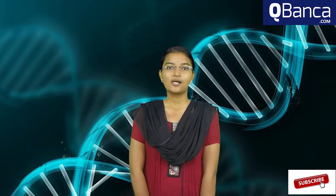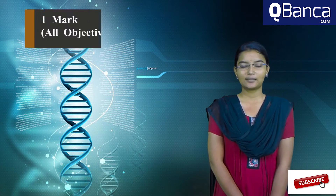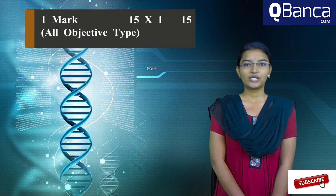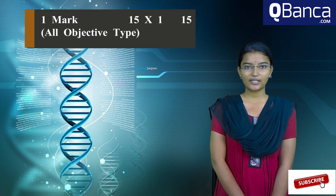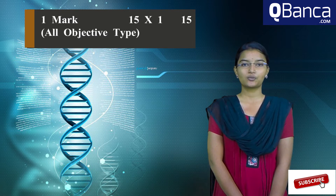The first topic is the question pattern. Part A has 15 one-mark questions — 15 × 1 = 15 marks. These are objective type questions, mostly book back questions.